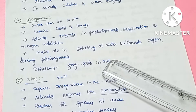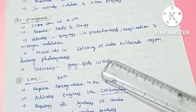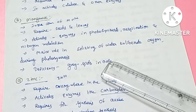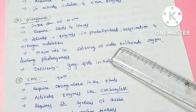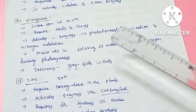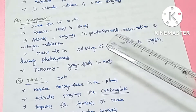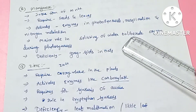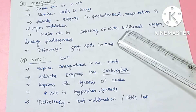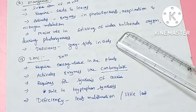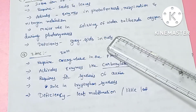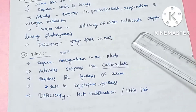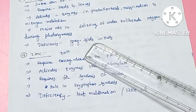Manganese plays a major role in photolysis of water — the splitting of water molecules — which leads to oxygen liberation. The deficiency of manganese in oat plants causes gray color spots to form.